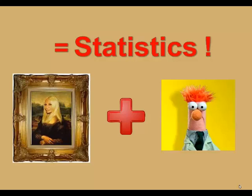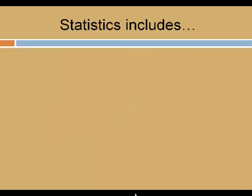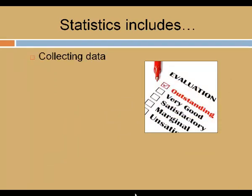So in general, Statistics is all about data. Let's be a little more specific. What exactly do we do with the data? Well, Statistics includes collecting data, maybe by taking a poll or a survey, by conducting an experiment, or by installing illegal wiretaps.